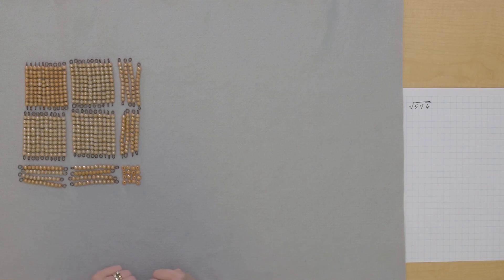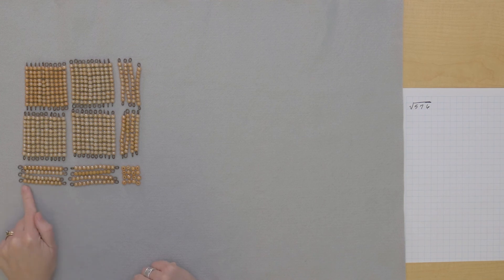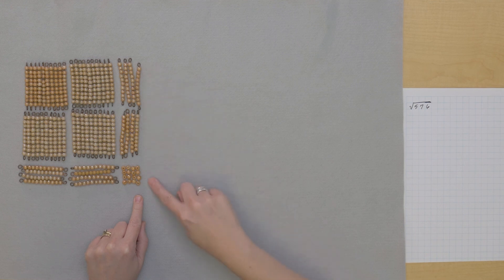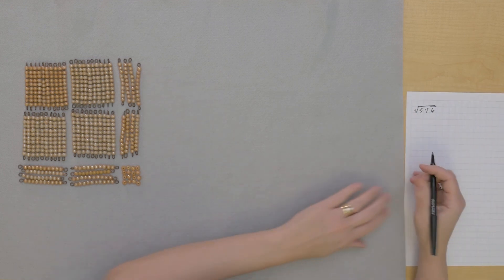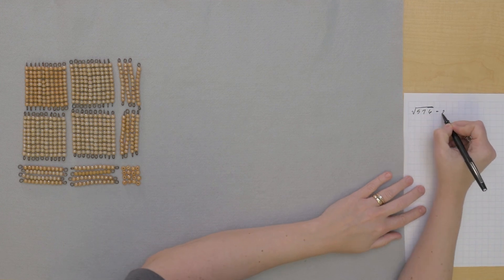We've built an exact square. Let's take a look at the root and see what the square root is. The square root is 10, 20, 1, 2, 3, 4. It's 24. And I can see 24 here as well. So the square root of 576 equals 24.